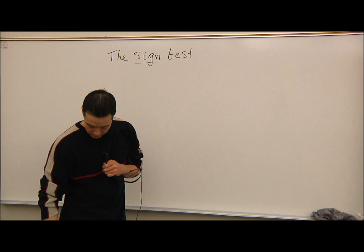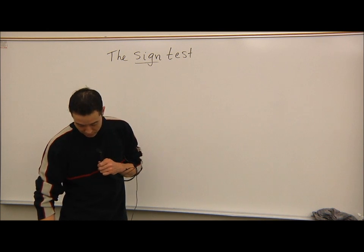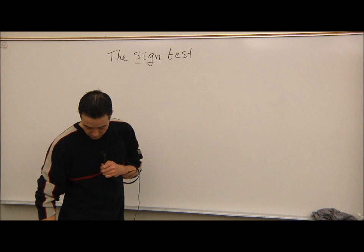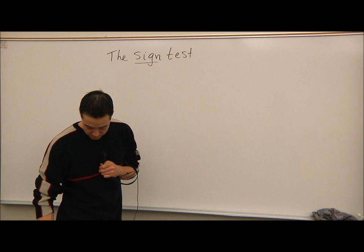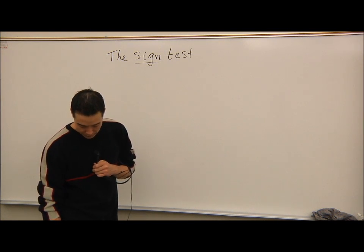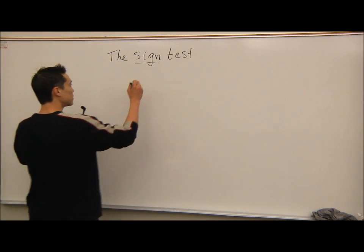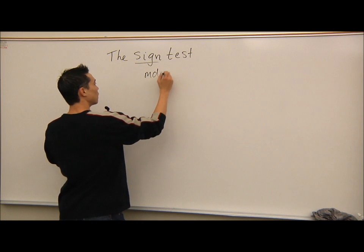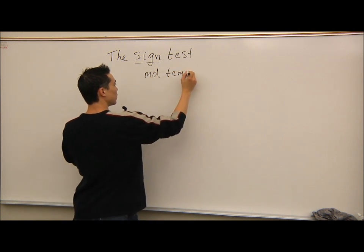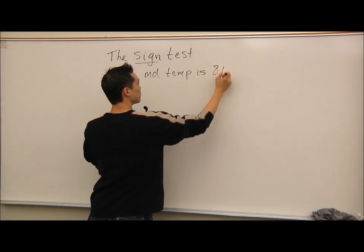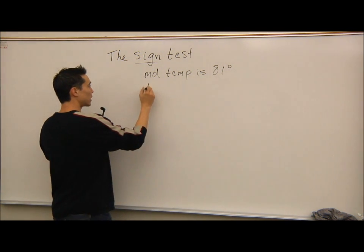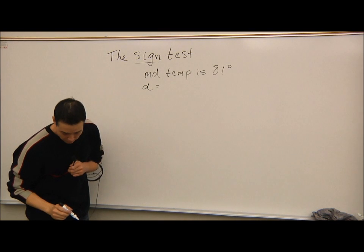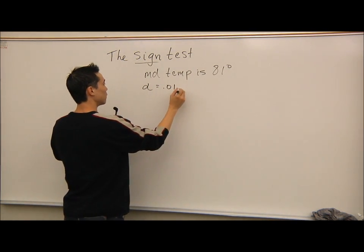A meteorologist suggests the median temperature in Jacksonville is 81 degrees Fahrenheit. A sample of 20 such temperatures was recorded. At alpha equals 0.01, is there enough evidence to reject the meteorologist's claim? So the claim was the median temperature is 81 degrees. At alpha equals 0.01, test the claim.